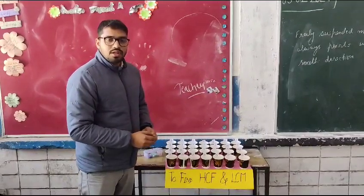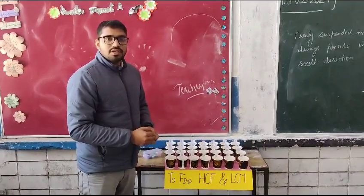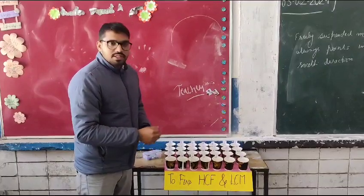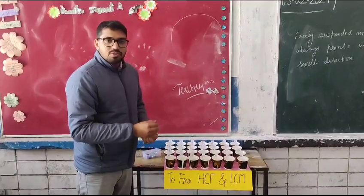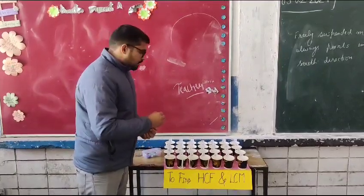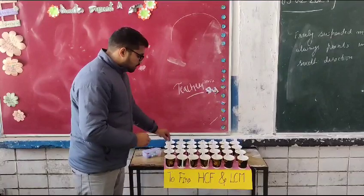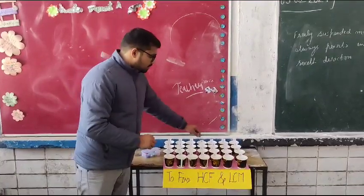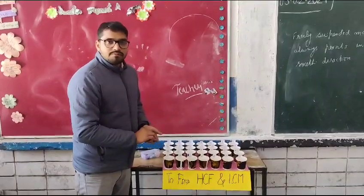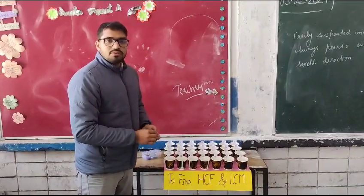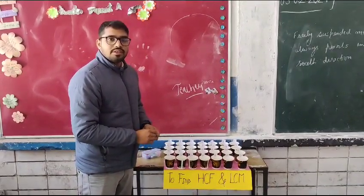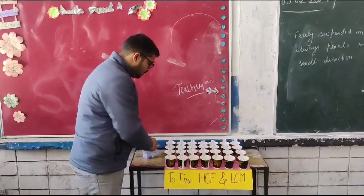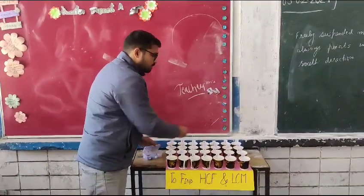SCM is the common factor. SCM is 5 and 10. In the factor of 5, 1 is a factor and 5 is a factor. So 1 and 5 are the two factors of 5.